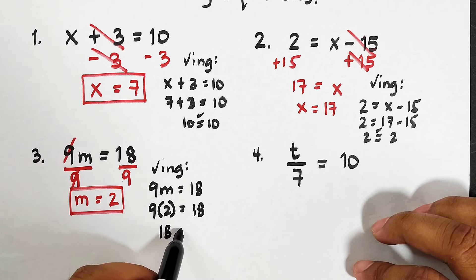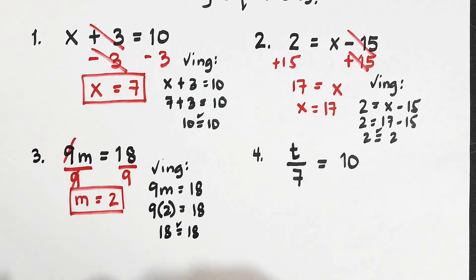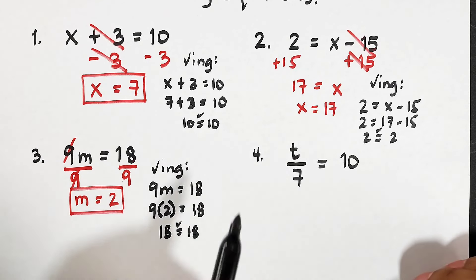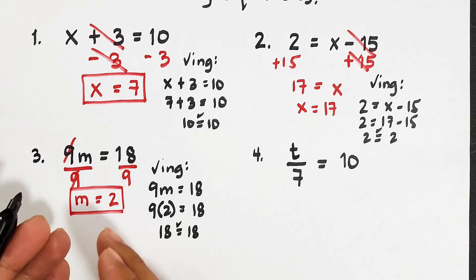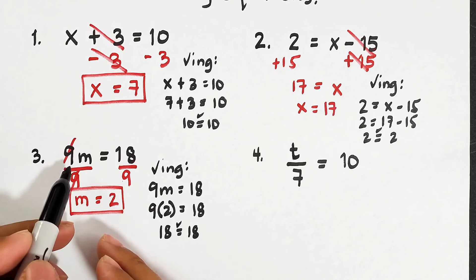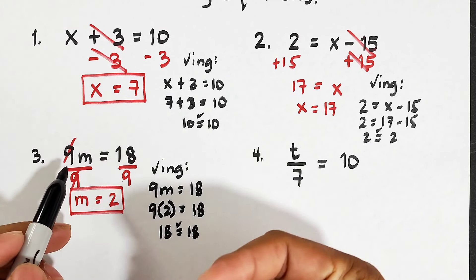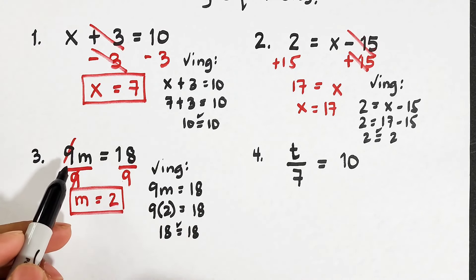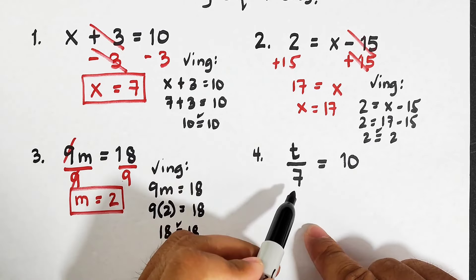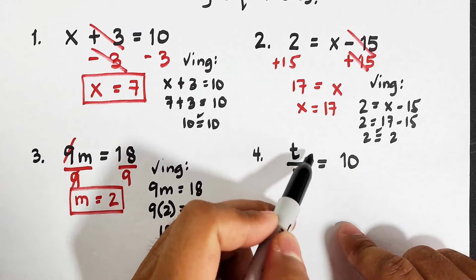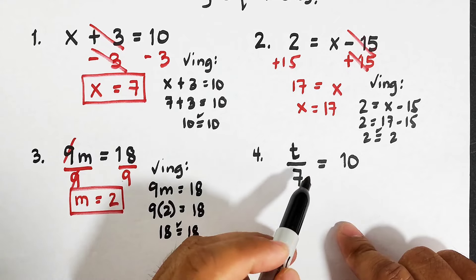Now if you want to check whether your answer is correct, we have 9m is equal to 18. Since m is equal to 2, replace m with 2 — that gives us 9 times 2 is equal to 18. Multiplying these two numbers: 18 is equal to 18. They are equal, meaning the value of m is correct.